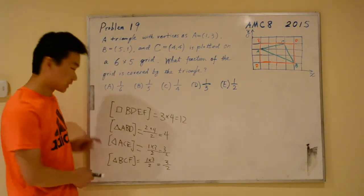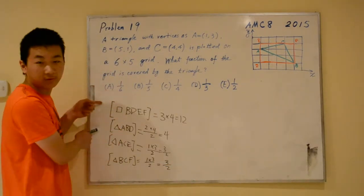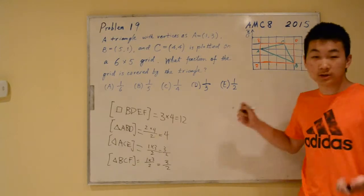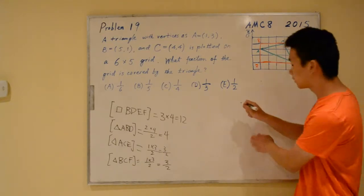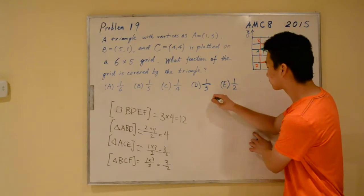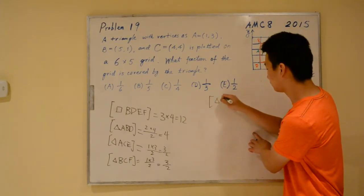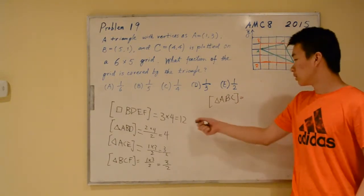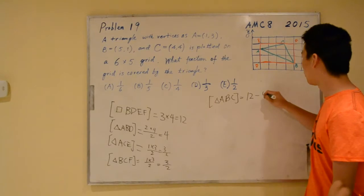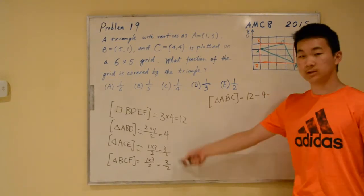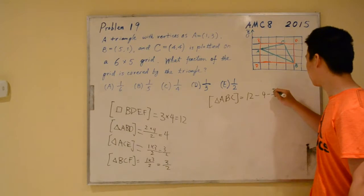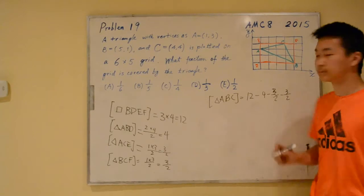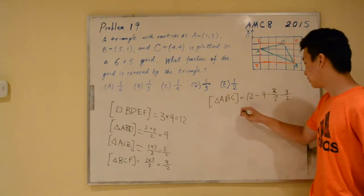We're looking to subtract these areas from the rectangle. Let's do that. The rectangle's area, so this should give us the area of triangle ABC. This equals 12 minus 4 minus 3 halves minus 3 halves, which equals 8.